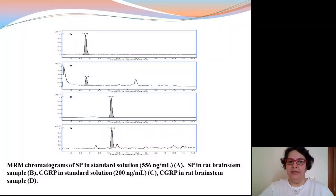Shorter retention time than the literature using a C-8 narrow-bore column was obtained for the analysis of neuropeptides. Unlike mass analyzers used in other LC-MS methods such as MALDI-MS and ion trap MS, a triple quadruple mass analyzer is better able to determine and quantify neuropeptides.